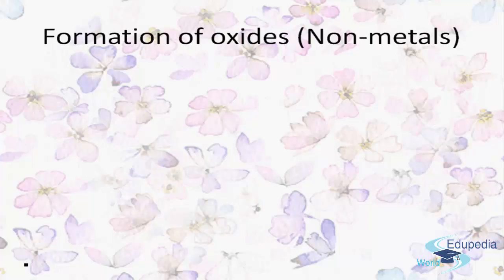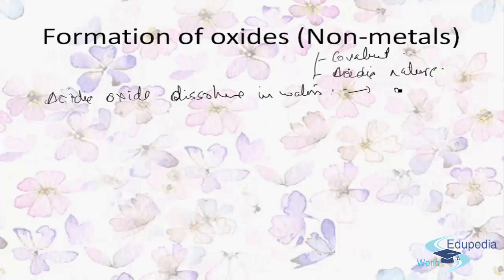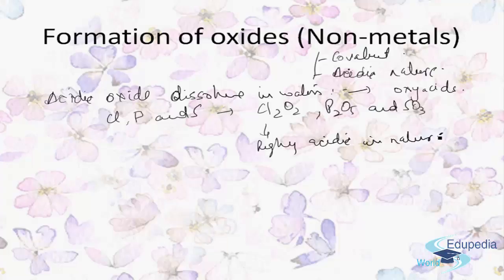Now let's talk about the formation of oxides in non-metals. Non-metals form covalent and acidic oxides. When these acidic oxides dissolve in water they form oxy-acids. For example, chlorine, phosphorus, and sulfur give the oxy-acids Cl₂O₇, P₂O₅, and sulfur trioxide (SO₃), which are highly acidic in nature. When dissolved in water they form acids, and these oxides react with alkalis to form salts.